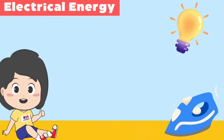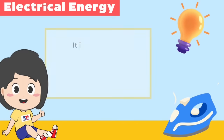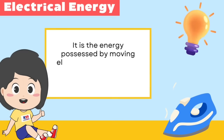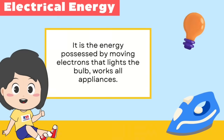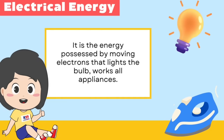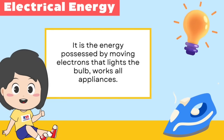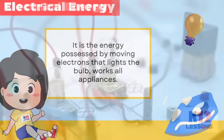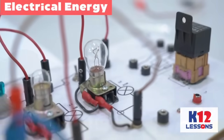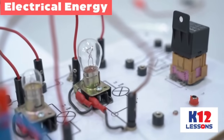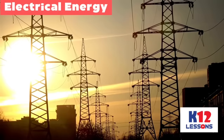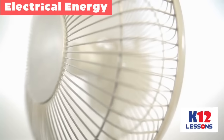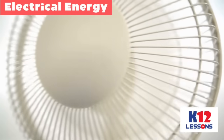Electrical energy is the energy possessed by moving electrons that lights the bulb and works all appliances. Examples: electric circuit, lightning, transmission lines, and turned-on appliances.